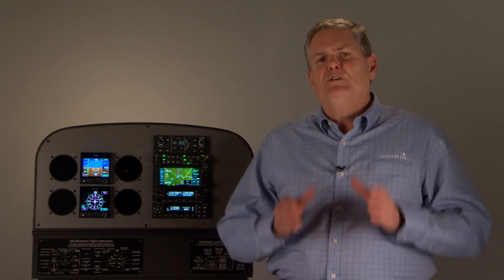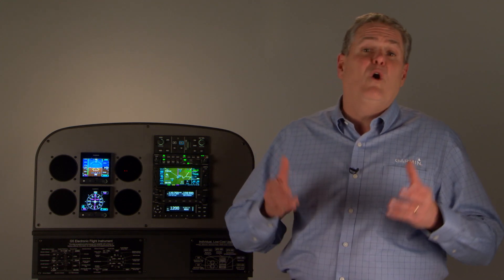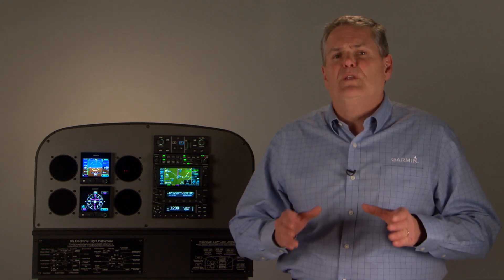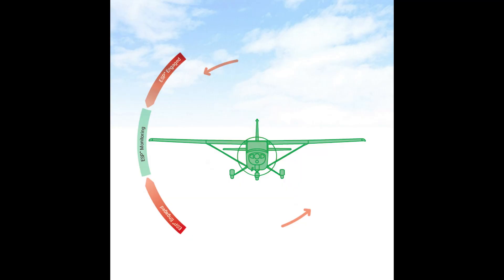Now, the first feature I'd like to cover with the Autopilot is what we call ESP or Electronic Stability Protection. ESP is working for you in the background while you're hand-flying the aircraft. You're flying along, you start banking, and the Autopilot's not turned on.